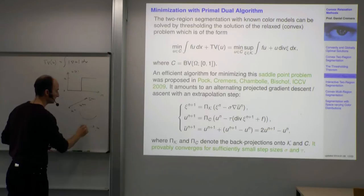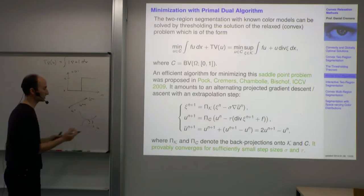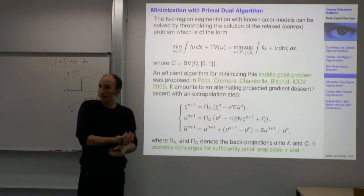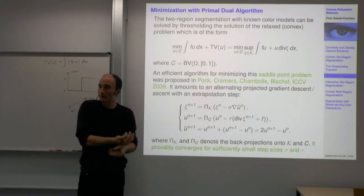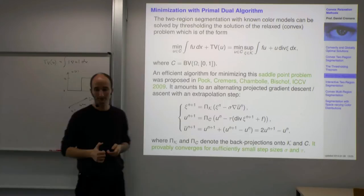We were able to prove in the 2009 paper that this primal-dual algorithm provably converges to a minimizer — more precisely a saddle point — of the energy. It's called a saddle point because we're minimizing in U and maximizing in xi. In one set of variables you have a minimum, and in the other a maximum. These critical points are called saddle points for obvious reasons.